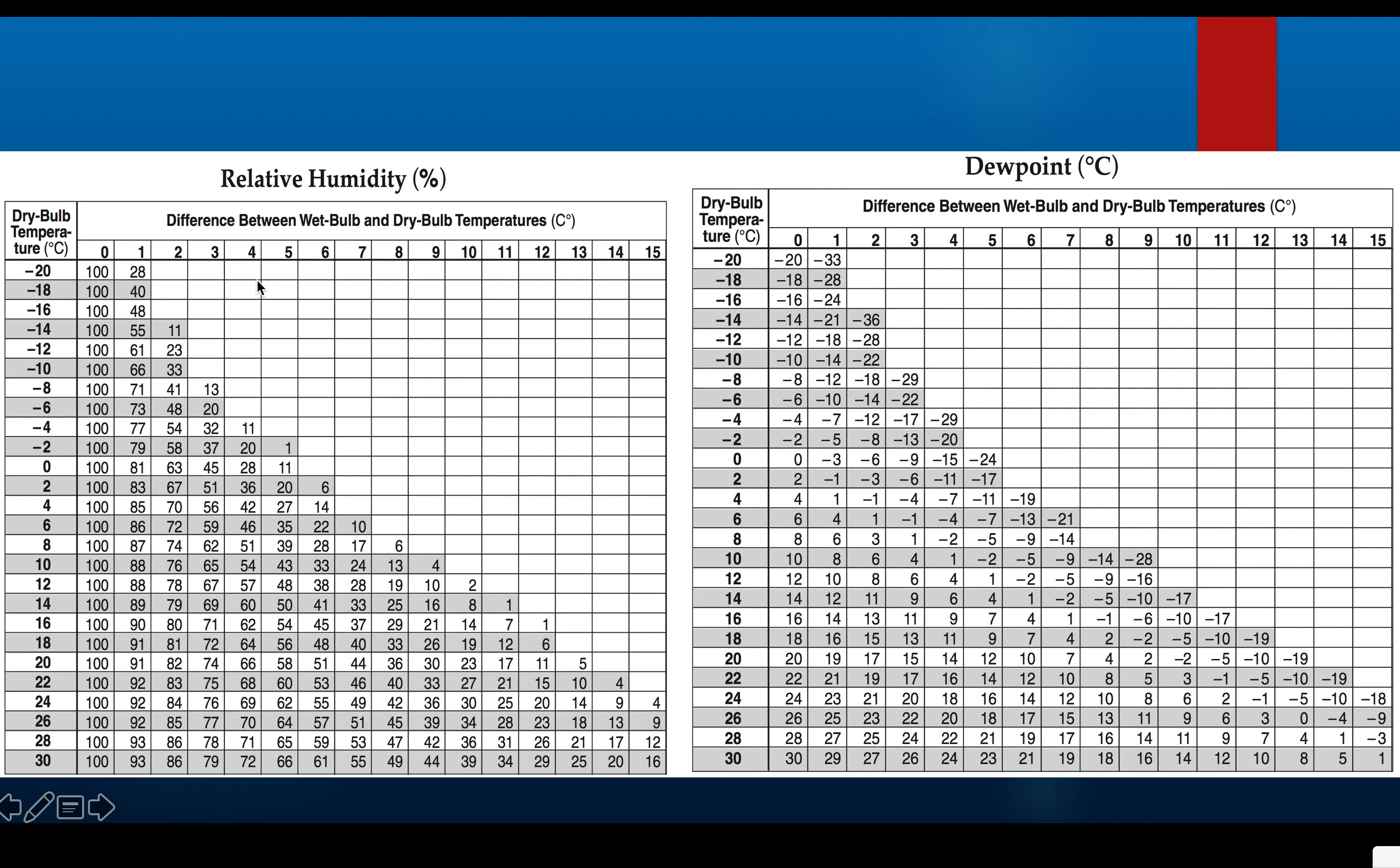So, let's look at that at the humidity chart. We said 24 is the dry bulb. The relative humidity is 55%. So, we follow it over: 100, 92, 84, 76, all the way there is the 55%. We follow the 55% up. We get a difference of 6.